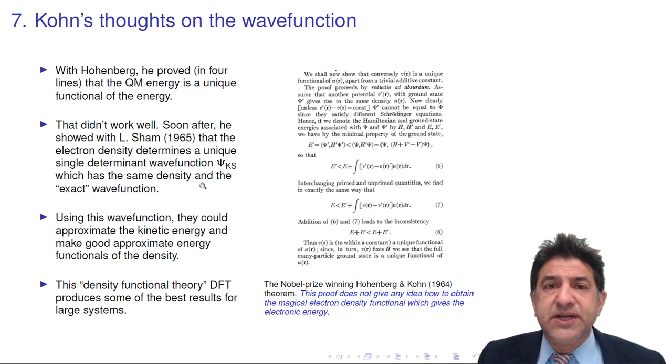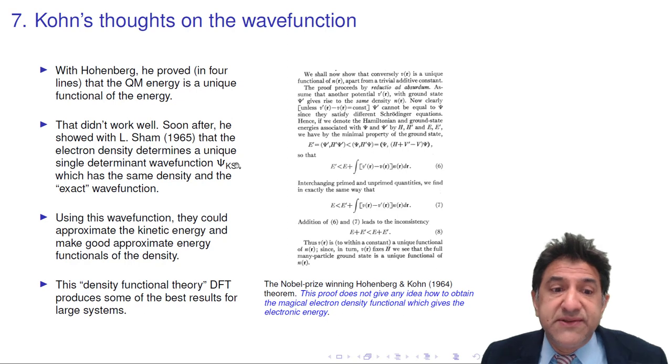So he couldn't make a density functional theory only on the density. But he was able to make a kind of density functional theory based on a simple wave function. That's the Kohn-Sham wave function, which happens to give the exact electron density of any system.